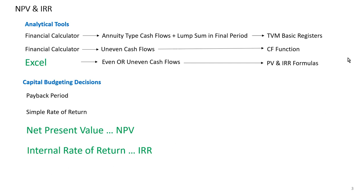The TVM Part 2 video will solve yet another problem — one that will have uneven cash flows. We'll use the financial calculator's basic registers to solve that problem, and you will also be introduced to the CF function on the financial calculator to handle those uneven cash flows. Finally, we'll use Excel to solve the problem. In all cases, we're going to solve for both NPV and IRR. You really need to watch TVM Part 2 — it gives you a neat way to solve NPV and IRR problems.